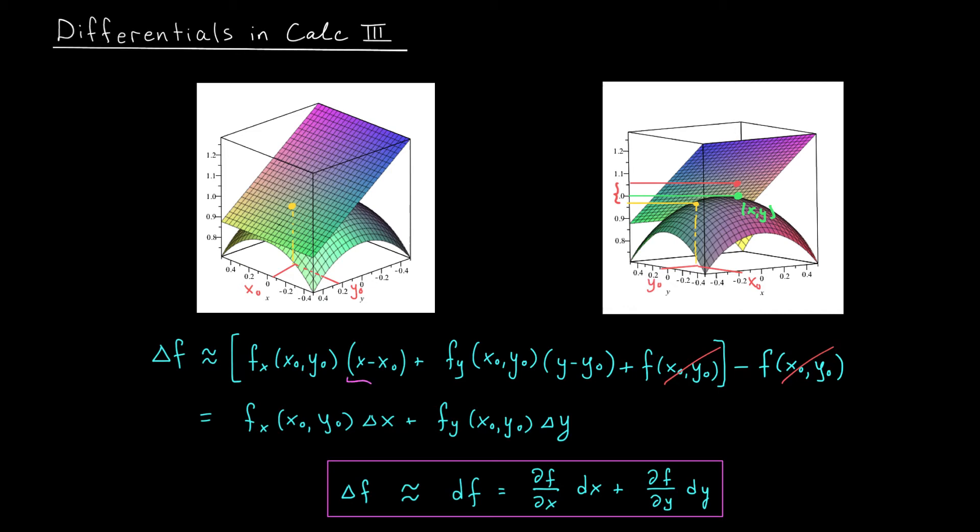But hold on a second, x minus x₀ is really our change in x, and y minus y₀ is really our change in y. So I'm going to write those as delta x and delta y, respectively. That means that our change in f is approximately equal to fₓ(x₀, y₀) times delta x plus fᵧ(x₀, y₀) times delta y.